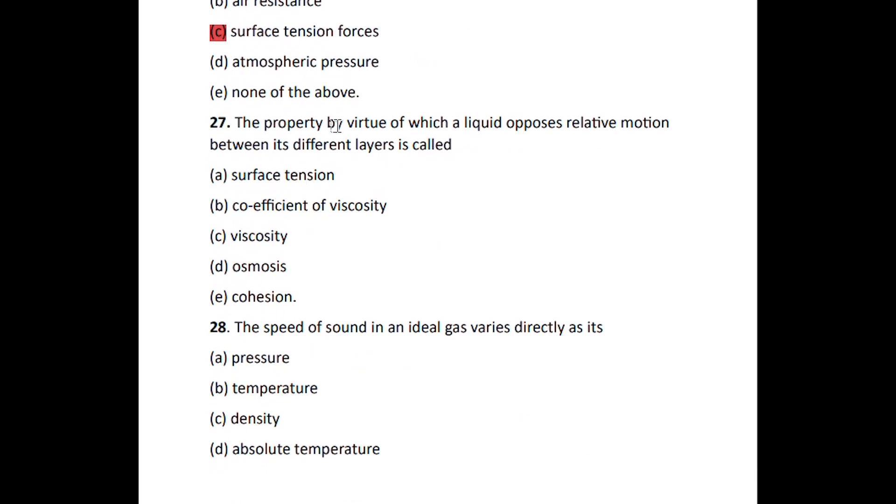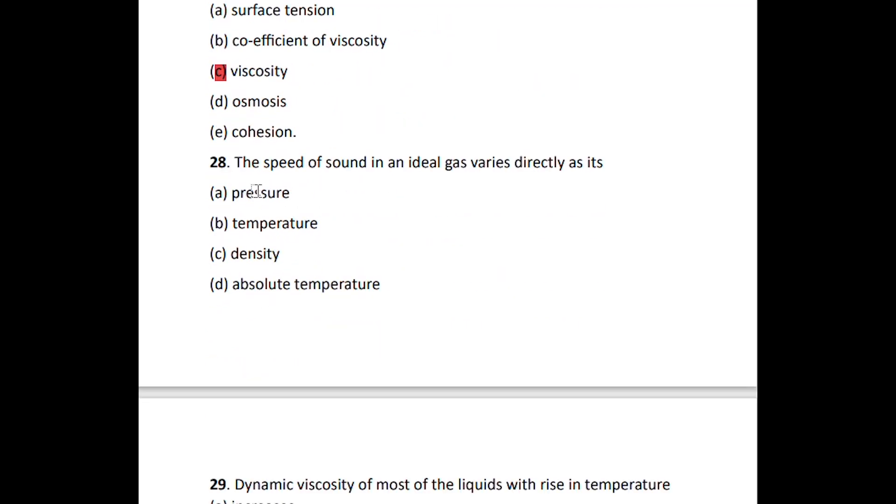Number twenty-seven: the property by virtue of which a liquid opposes relative motion between its different layers is called viscosity. So the property by which a liquid opposes motion is called viscosity. Number twenty-eight: the speed of sound in an ideal gas varies directly as its absolute temperature.